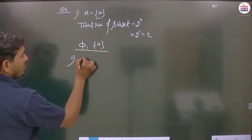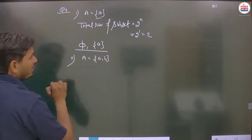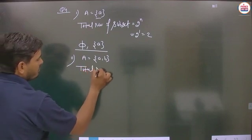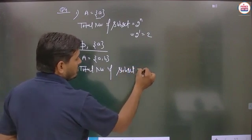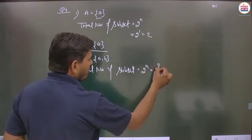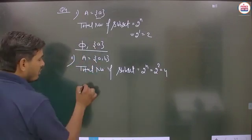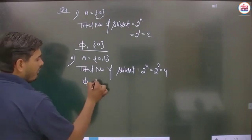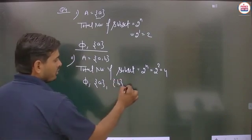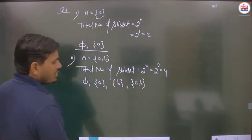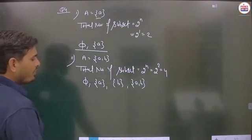Part (b): A = {a, b}. Total subsets = 2^2 = 4. The subsets are: ∅, {a}, {b}, and {a, b}. Every set is a subset of itself, so {a, b} is included.